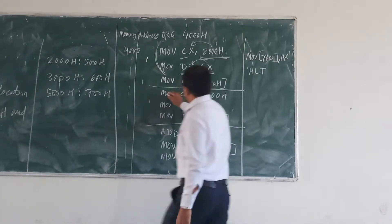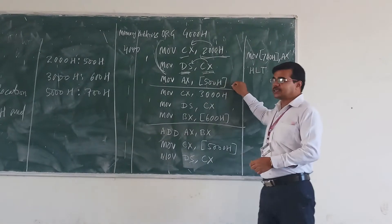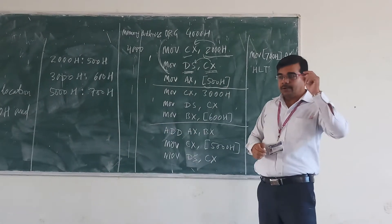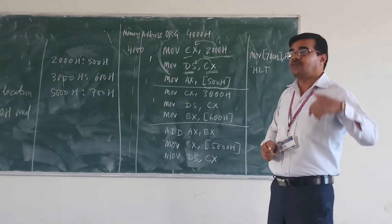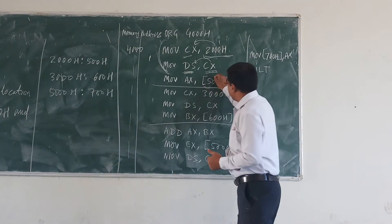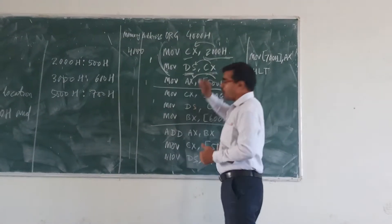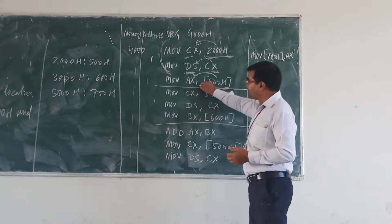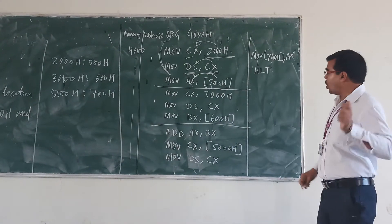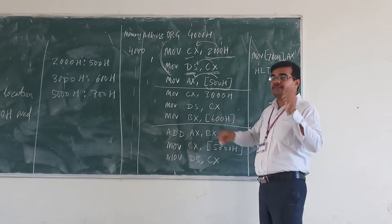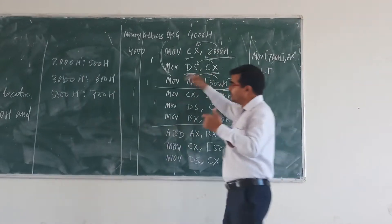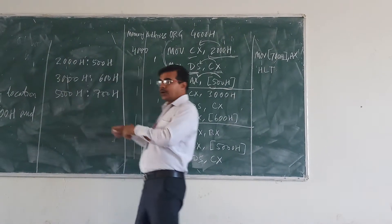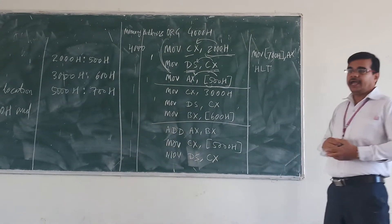Next, MOV AX, [500h]. So 500h is a memory address. The data available at memory location 500h — which is within segment 2000h — is copied into the AX register.